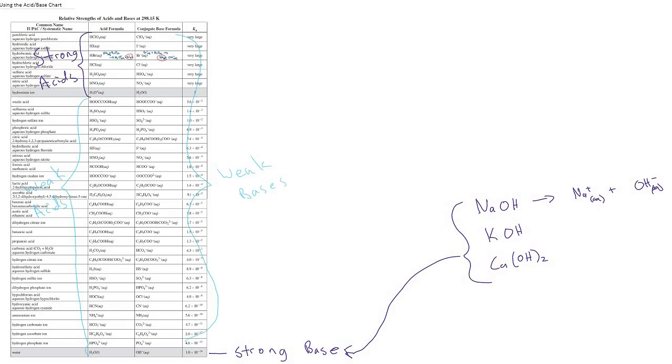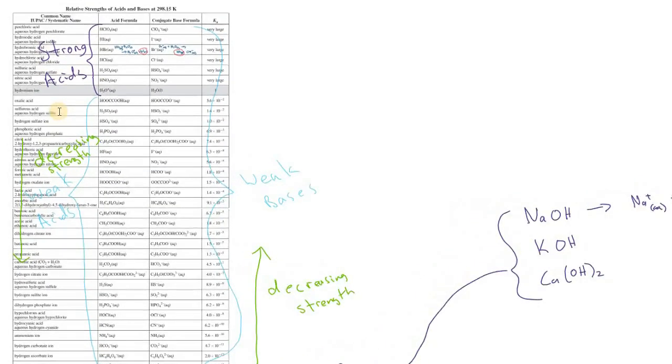And now amongst the weak, we could actually draw arrows here. So the weak acids decrease in strength as we go down. And the weak bases decrease in strength as we go up. So let me just explain what I mean by that.